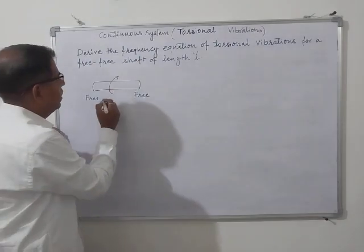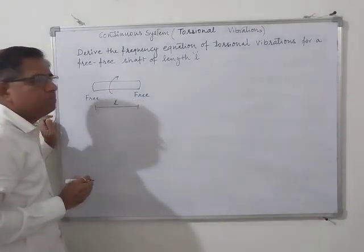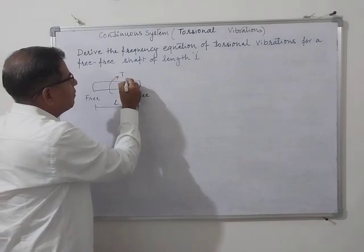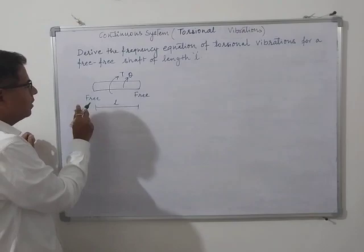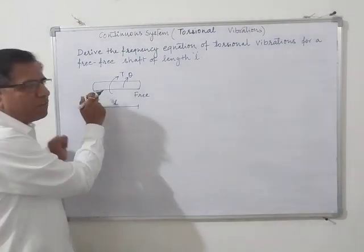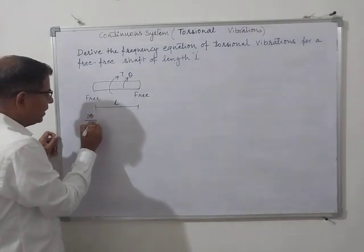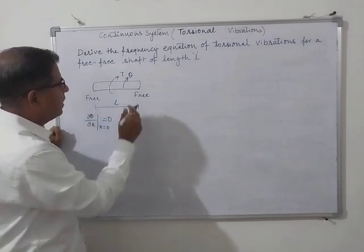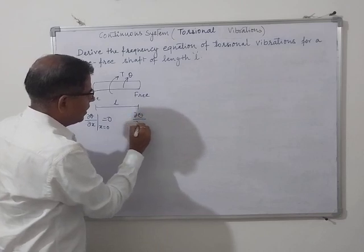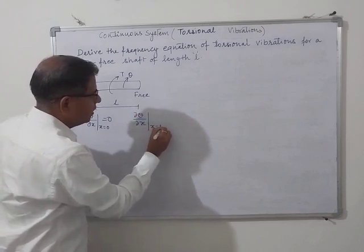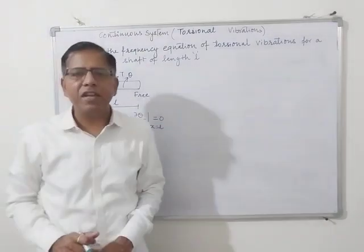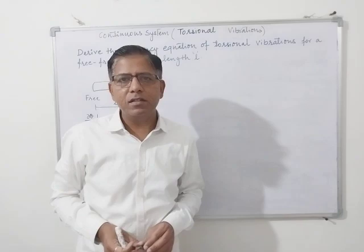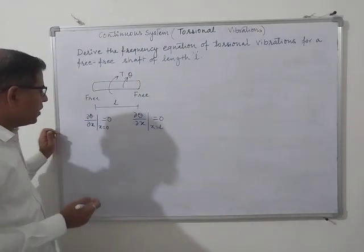We have a shaft of length l and both ends of the shaft are free. Because of the applied torque there will be angular displacement theta, and because of the free end the rate of change of angular displacement will be zero. So ∂θ/∂x at x equal to 0 is zero, and ∂θ/∂x at x equal to l is also zero, because both ends are free. At the ends the rate of change of angular displacement is zero.